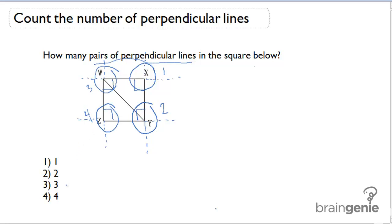So the answer to this question, how many pairs of perpendicular lines are formed in the square below, is four. There are four pairs of perpendicular lines in the square.